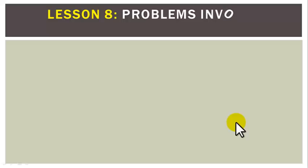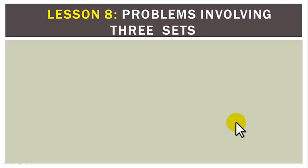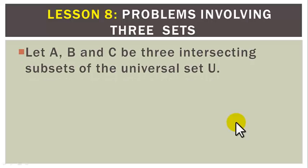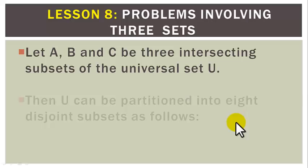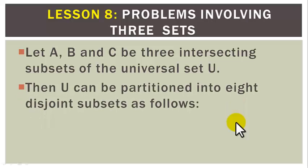Lesson 8: Problems involving 3 sets. Let A, B, and C be 3 intersecting subsets of the universal set U. Then U can be partitioned into 8 disjoint subsets as follows.